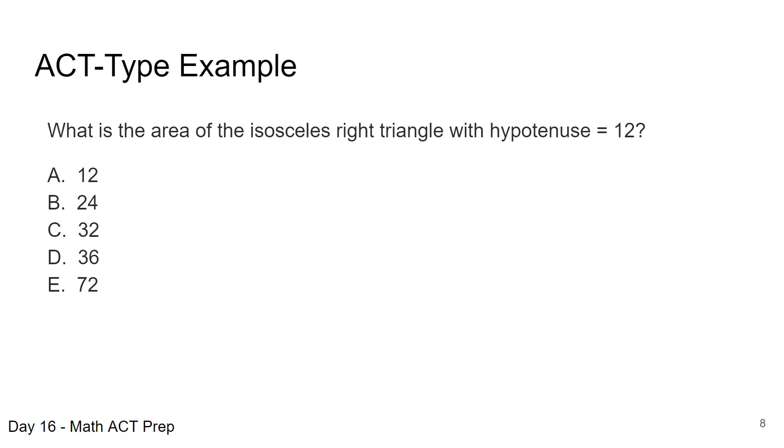So let's take a look at an ACT type problem, pause the video here, and then you can come back and we'll work it together. The question asks, what is the area of the isosceles right triangle with hypotenuse equal to 12?